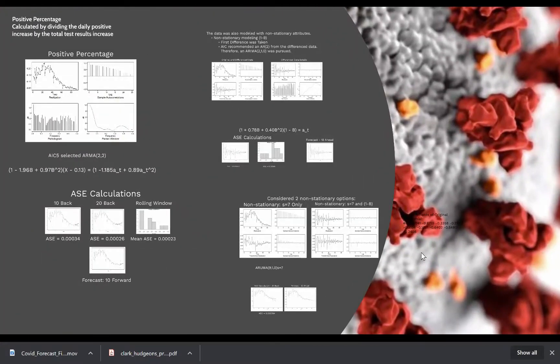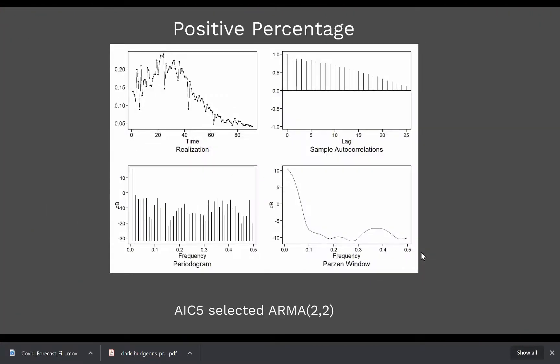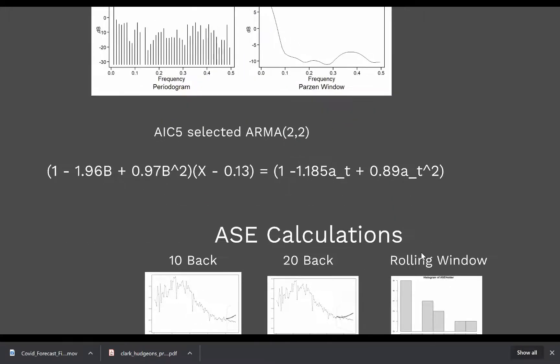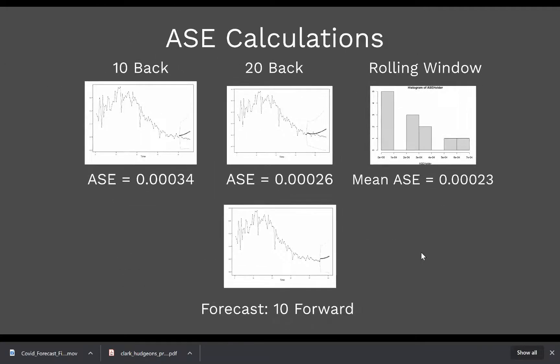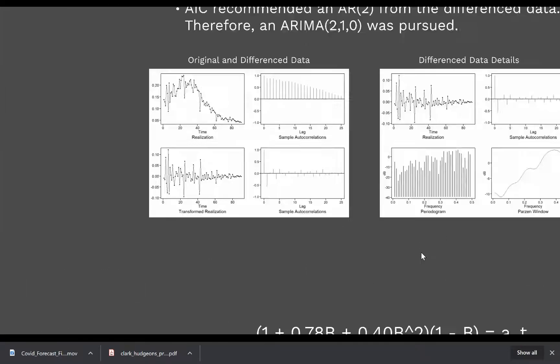Looking at the US data univariate modeling, here's a look at our positive percentage data. Running AIC selects an ARMA 2,2. Here's a look at the formula for that model and AIC calculations and forecasts shorter term 10 back and a 20 back. AIC calculations come out at 3.4 and 2.6 times 10 to the negative fourth respectively, and a mean AIC on a rolling window at 2.3 times 10 to the negative fourth. So that's kind of our baseline.